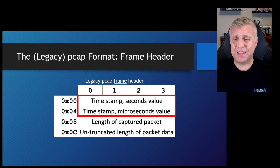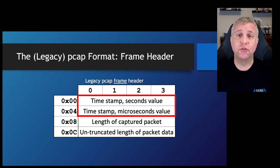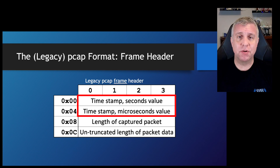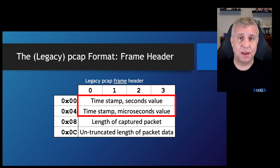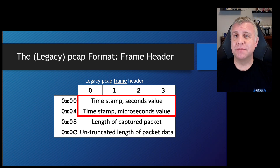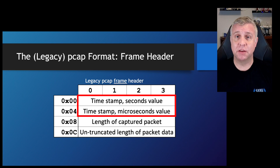An important point here: I'm specifically talking about the time the packet was observed — not necessarily the time it was sent or received. If you are observing network traffic somewhere between the sender and the receiver, some time elapses between when it was sent and when you observed it, and then some additional time elapses between your observation and when it's received. The only timestamp that is known is the clock of the system doing the observation, so that's the timestamp we actually get. In practice, the time between sender and receiver is usually quite small, but I always say 'observation time' to be precise.